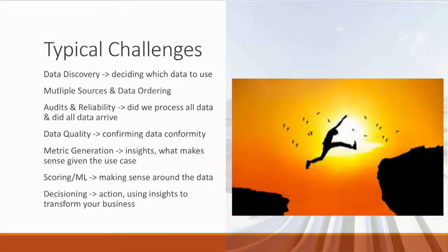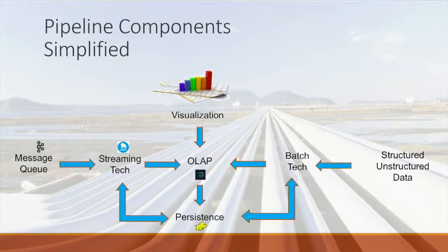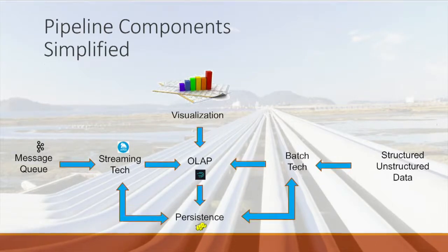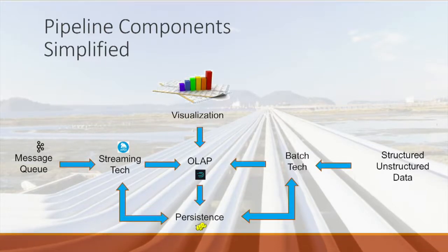Decisioning is the action layer, which is where you get into bots. Looking at the typical landscape: on the left you've got the message queue, on the right structured and unstructured data — all coming into your OLAP layer, then into visualization or consumption, which gets back to the access layer. We've had good experience working with Druid and Apex, and these are technologies that are evolving that we'll cover in more detail.